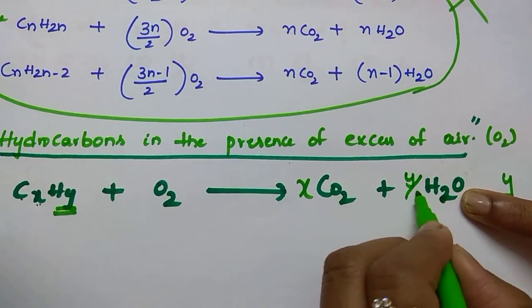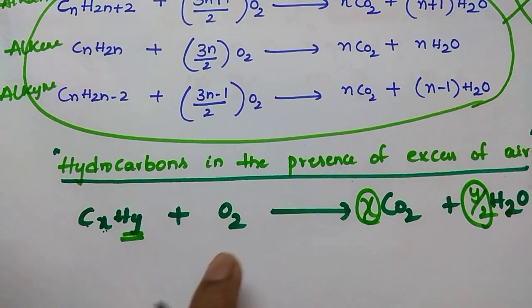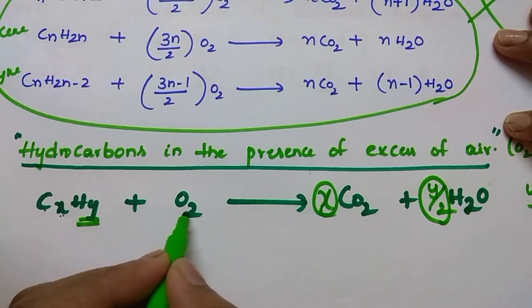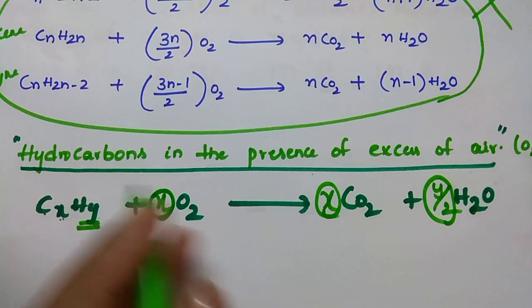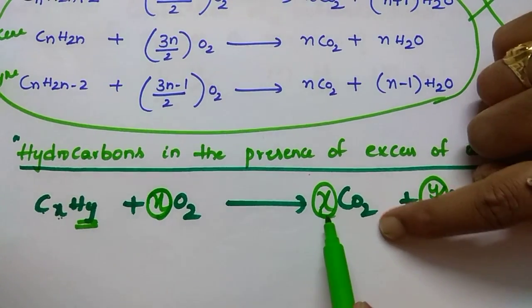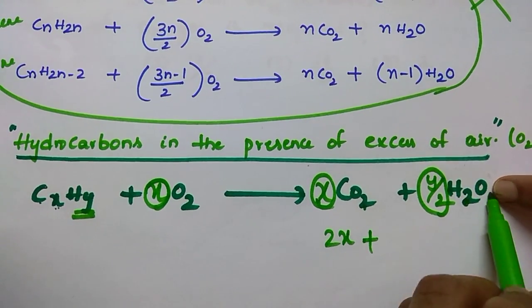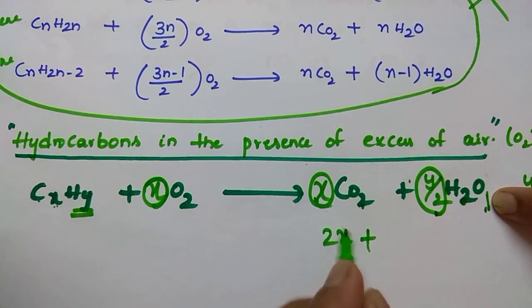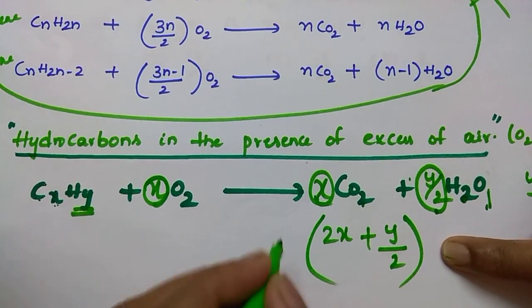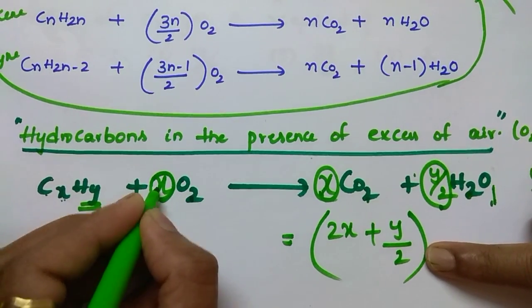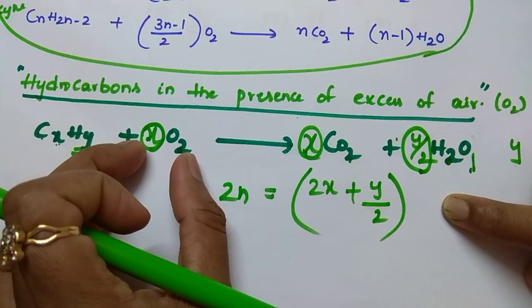And coming to the oxygens, how to balance? Suppose number of oxygens is n moles. Let us consider n moles. And here how many moles is there? 2 times x equals 2x, plus this side one oxygen times y by 2 means y by 2. Product side is 2x plus y by 2, and this side is 2 times n equals 2n. Both should be equal. Number of oxygens in reactant side should be equal to product side.